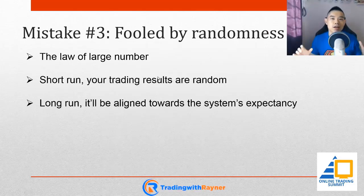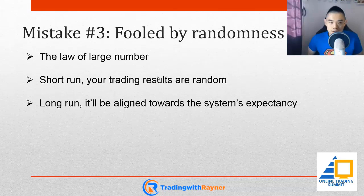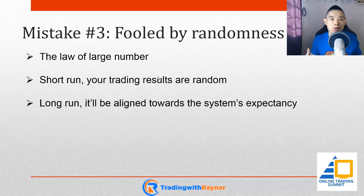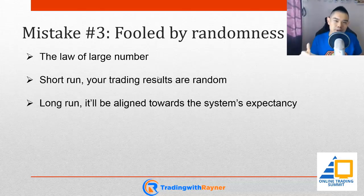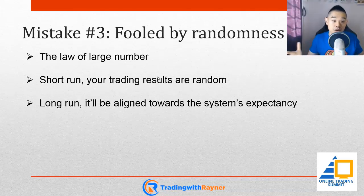Next one, mistake number three: fooled by randomness. So when you are speculating, when you are dealing in something called probability, there is something called the law of large numbers. This is a theory that states that in the short run, your trading results are actually random, and it only aligns towards the system's expectancy in the long run.